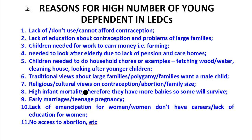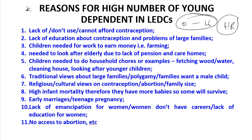Let's look at the reasons for a high number of young dependents in LEDCs — why there are lots of young people in the 0 to 16 age group. The major reason is high birth rate. Reasons for high birth rate include lack of contraceptives, lack of education about contraception, and the need or problem of large families.